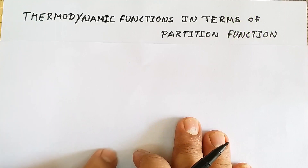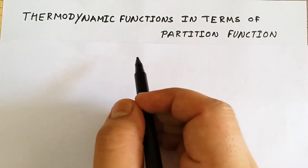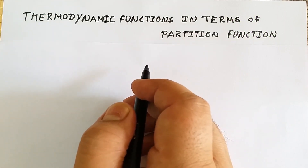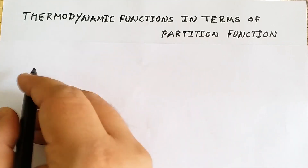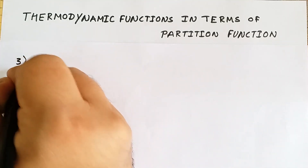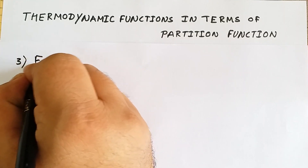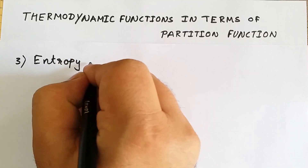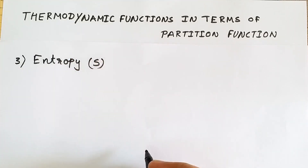Hey friends, welcome. We were discussing thermodynamic functions in terms of partition function. In our previous video we discussed internal energy and heat capacity in terms of partition function. Today the third thermodynamic property that we are going to discuss is entropy, represented by S. We are going to derive entropy in terms of partition function.